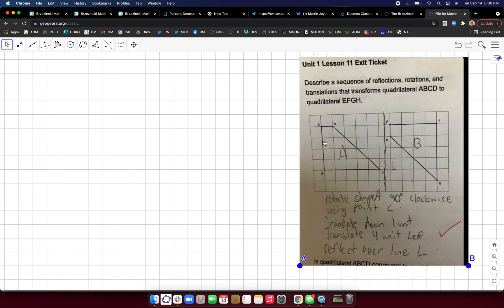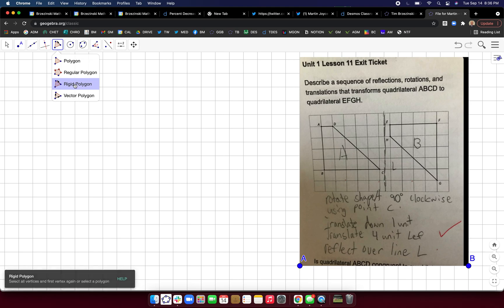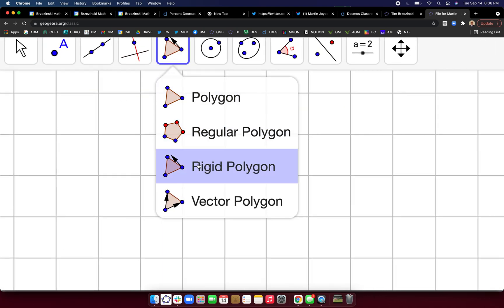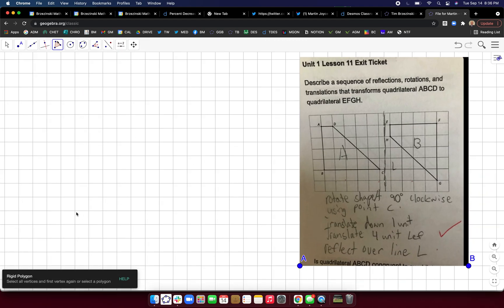So we're going to build these two trapezoids quick using the rigid polygon tool. It's right there in the polygon menu. You could use it with the regular polygon tool where you could change the shape, but rigid keeps it rigid. And when I do transformations, I kind of like to do it that way, at least only to start. So let's make it. We have one, two, three, four, five at the bottom, then we go up four and over one.